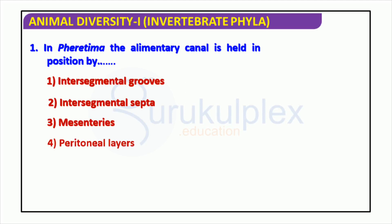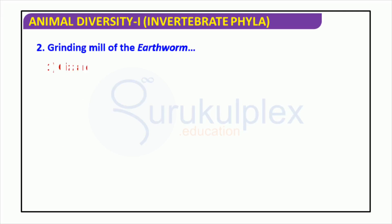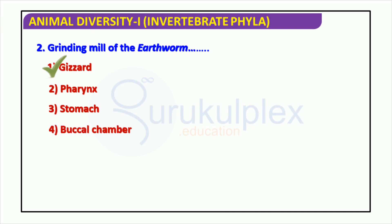Ferritima utilizes mesenteries to maintain its alimentary canal in place. This is only one of the many wonderful invertebrates that occupy our world. From annelids to mollusks, there is a fantastic selection of invertebrates existing. The earthworm has a strong grinding mill that enables it to process sustenance. This grinding mill is made out of four different pieces: the gizzard, the pharynx, the buccal chamber, and the stomach. Each of them makes a critical contribution in helping the earthworm process, absorb nutrients, and discard waste.